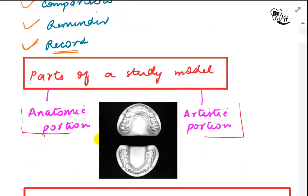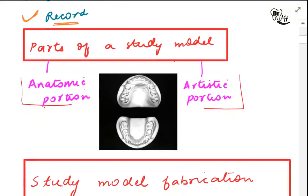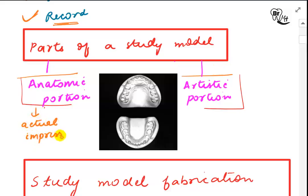A study model has two parts: the anatomic part and the artistic part. The anatomic part is the portion replicated from the patient's mouth — the actual impression of the dental arch — and no changes should be made to this portion. The artistic portion is the base and extra sides which provide aesthetic appearance.